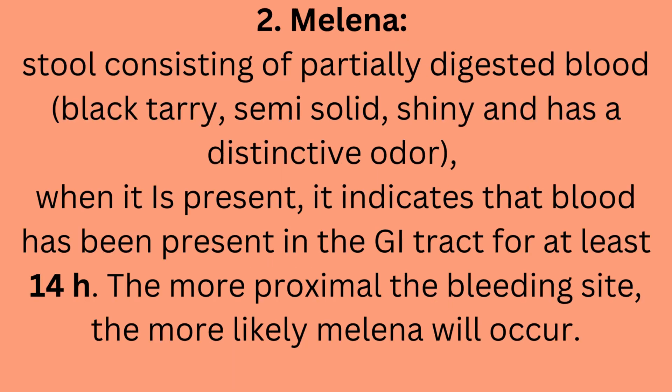Number two: melena — stool consisting of partially digested blood; black, tarry, semi-solid, shiny, and with a distinctive odor. When present, it indicates that blood has been in the GI tract for at least 14 hours. The more proximal the bleeding site, the more likely melena will occur.